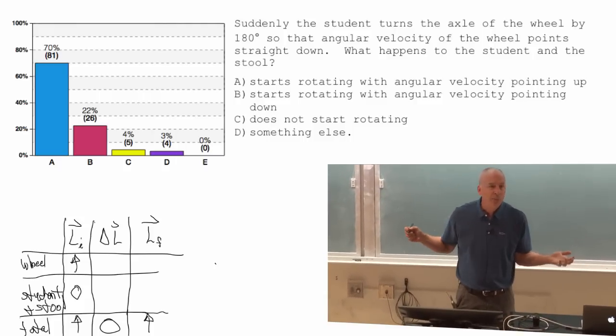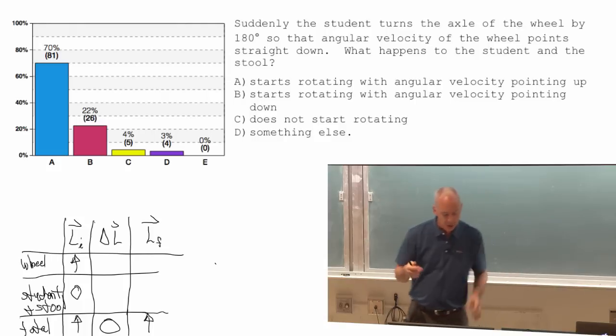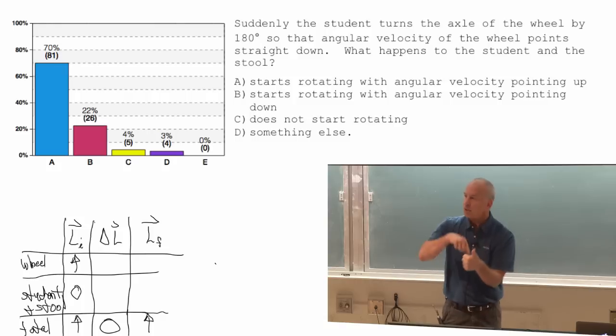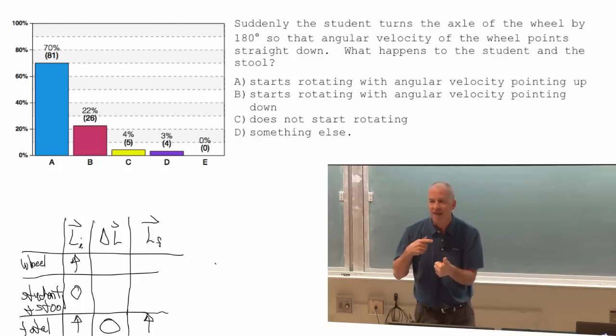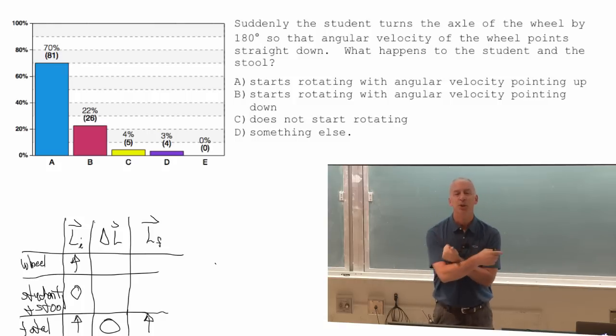Why did that happen? Because those two, the two pieces of our physical system, the wheel plus her, have essentially, have negligible torque from the outside.